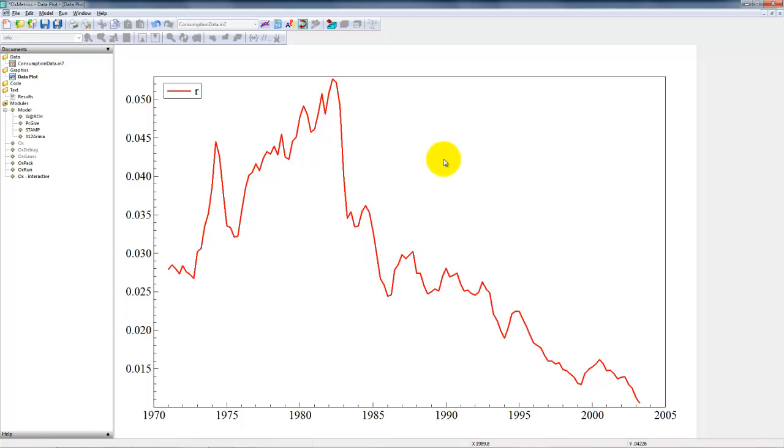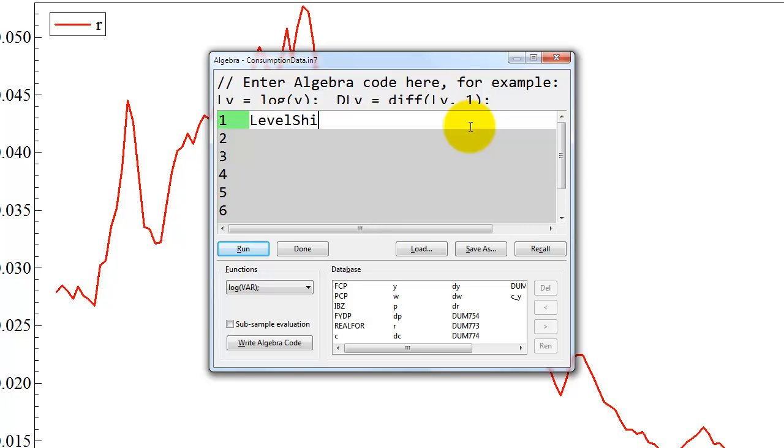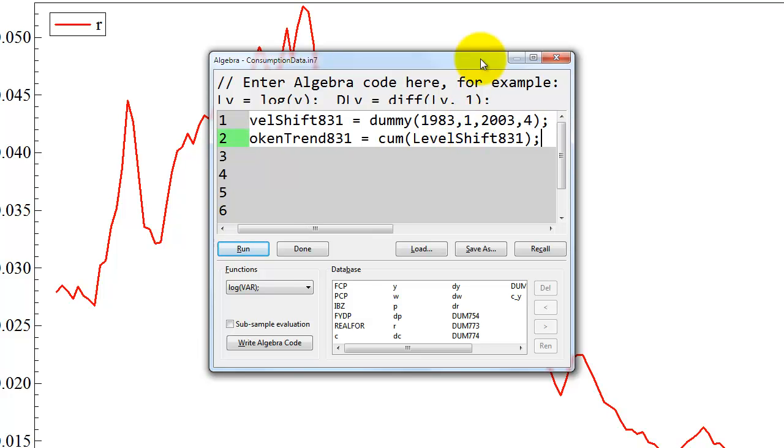So the first thing we do is create the new variables. We need to create a level shift and a broken trend. First, level shift 83-1. Create that by using the function dummy. Specify the first date, 83-1, and then the last date, 2003-4. End by a semicolon. And then we will add a broken trend 83-1. We simply compute that by accumulating the level shift. End with semicolon. Click run.